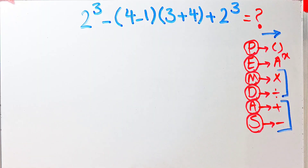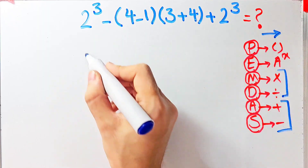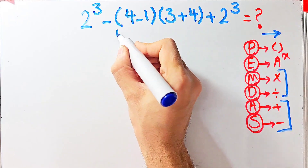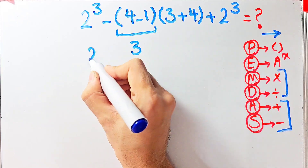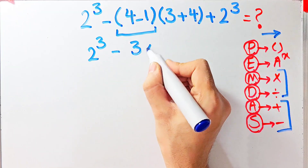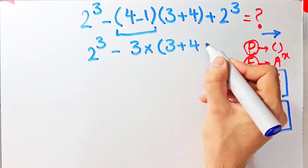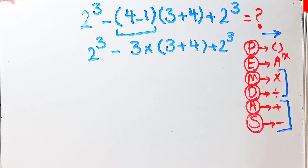According to the PEMDAS rule, in this question we first simplify the parentheses. Inside the first parenthesis we have 4 minus 1, which equals 3. Now we have 2 to the power of 3, minus 3, then times open parenthesis 3 plus 4 close parenthesis, then plus 2 to the power of 3. We still have exponents, subtraction, multiplication, parentheses, and addition.